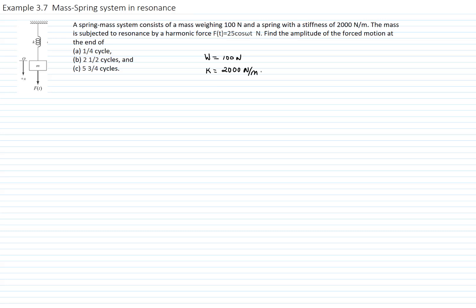This allows us to find the natural frequency. They tell us that the system is in resonance. Therefore, we know that the forcing frequency is equal to the natural frequency, which is the square root of 2,000 over 100 divided by gravity.